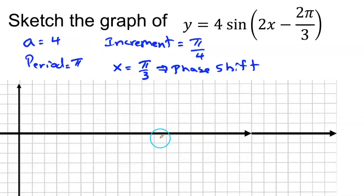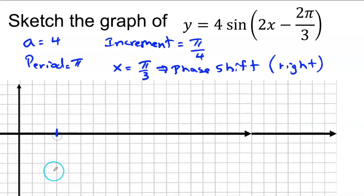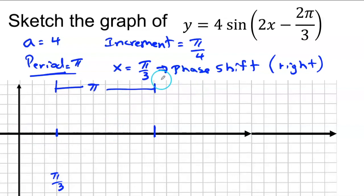Now I have my increments of π over 4 and my phase shift of π over 3. That means my graph is going to move to the right by π over 3 — that's where I'm going to start. So this point is π over 3, and then from there the period is π, so one full cycle spans from π over 3 to π over 3 plus π. I start at my phase shift and from here, because this is sine, I'll have my full cycle.